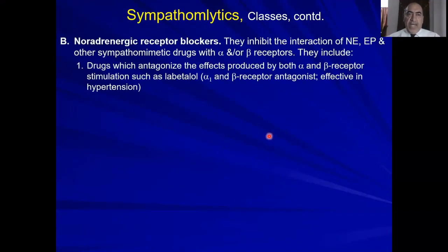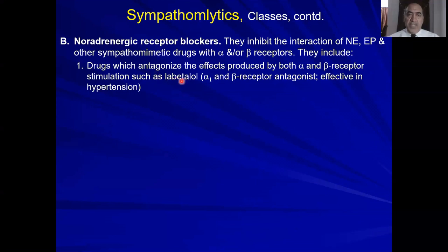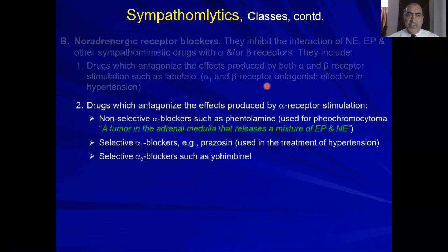The second major class is the adrenergic receptor blockers. When we talk about adrenergic receptors, you have to remember there are two classes: alpha and beta. There are drugs that block both alpha and beta — these are called mixed antagonists, such as labetalol. It inhibits alpha-1 and beta receptors and is effective in hypertension.